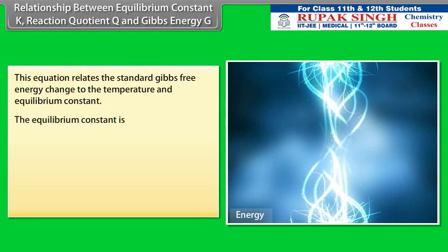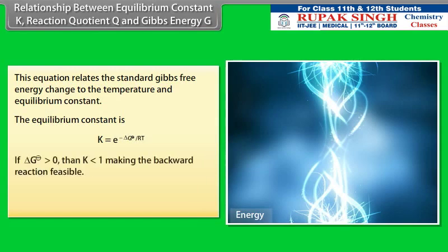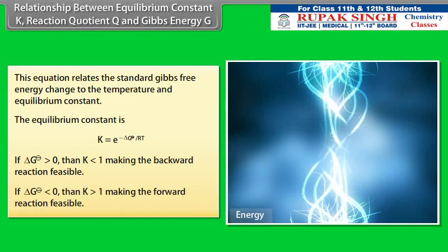If the change in standard Gibbs free energy is greater than zero, then K is less than 1, making the backward reaction feasible. If the change in standard Gibbs free energy is less than zero, then K is greater than 1, making the forward reaction feasible.